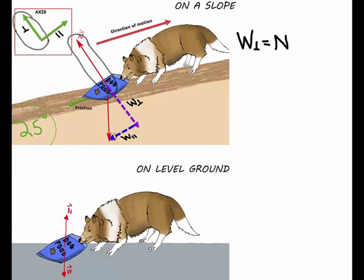Also, here the perpendicular component of W equals the normal force, which is different than on level ground. On level ground, the normal force is equal to the weight.